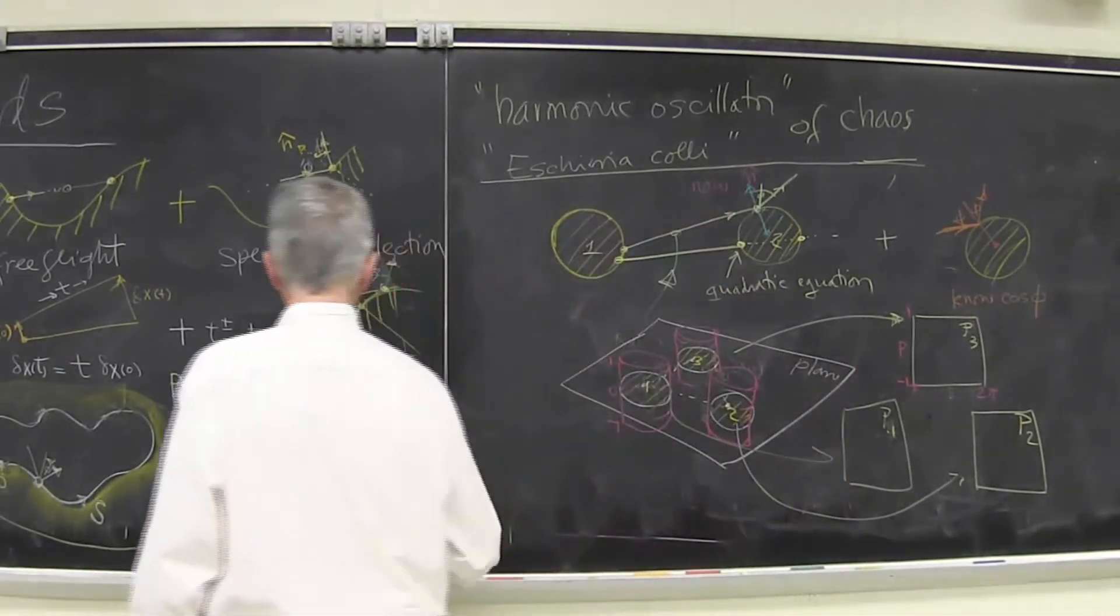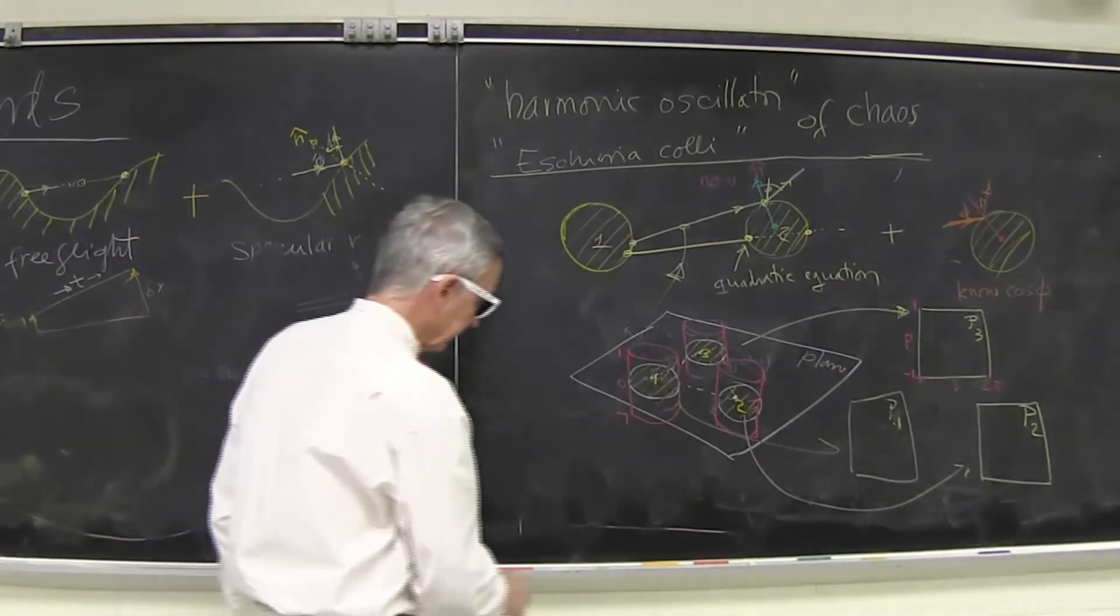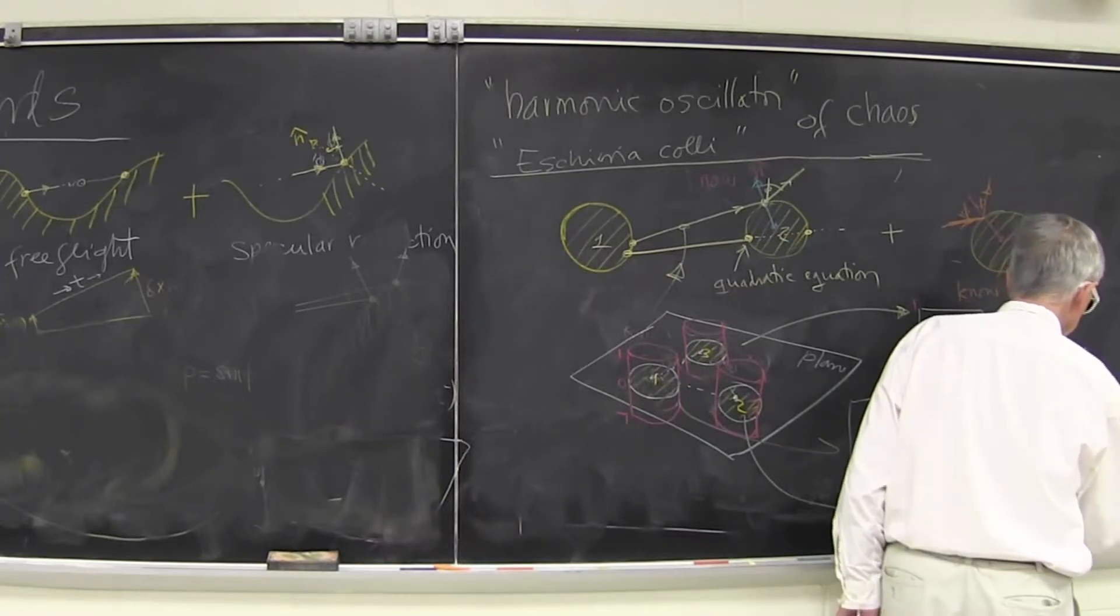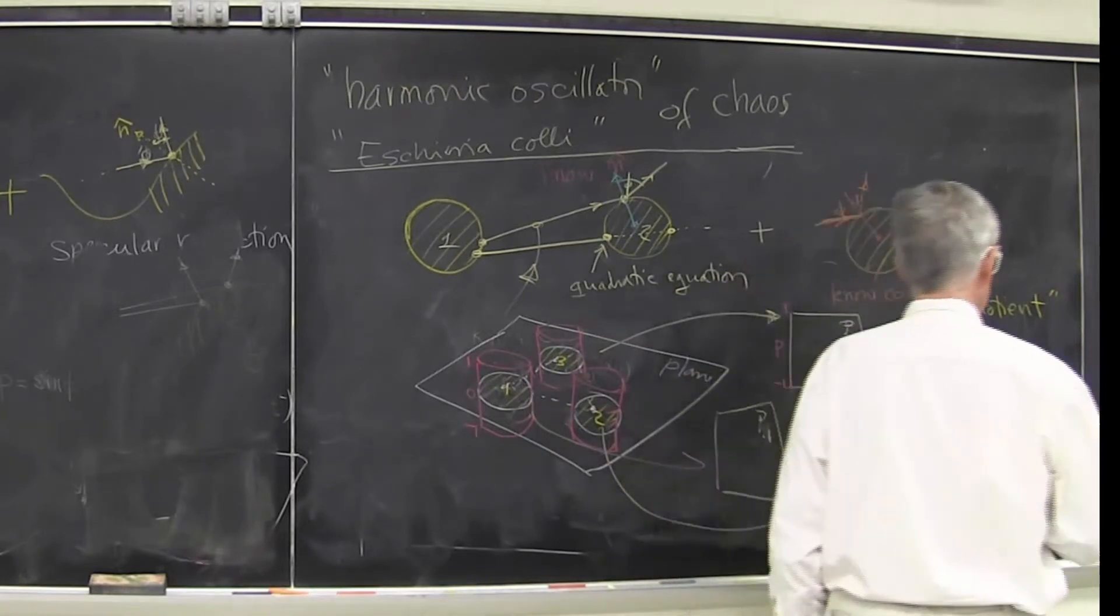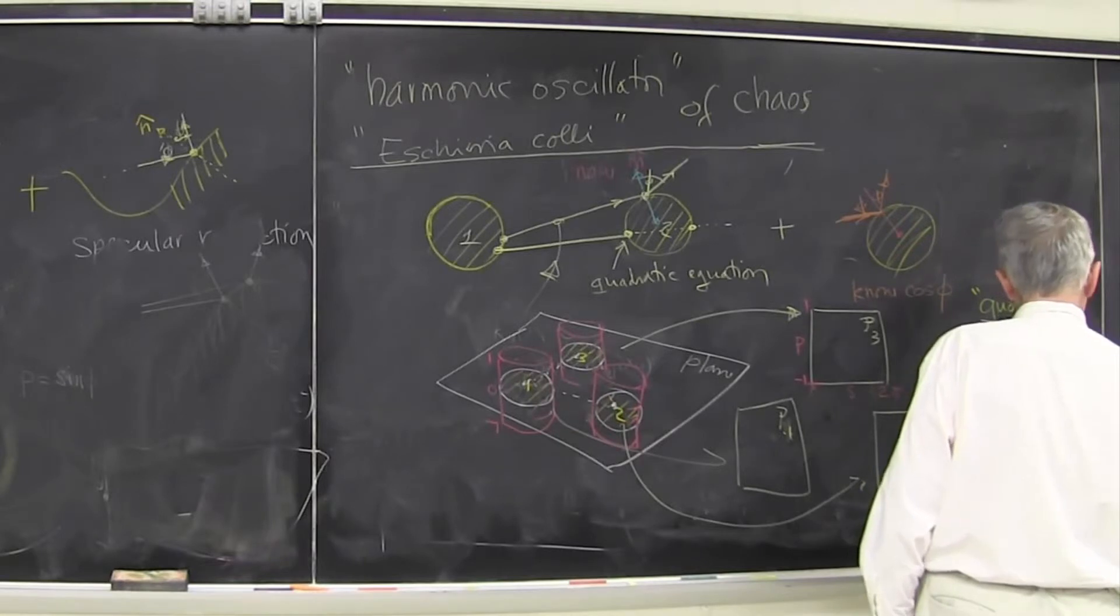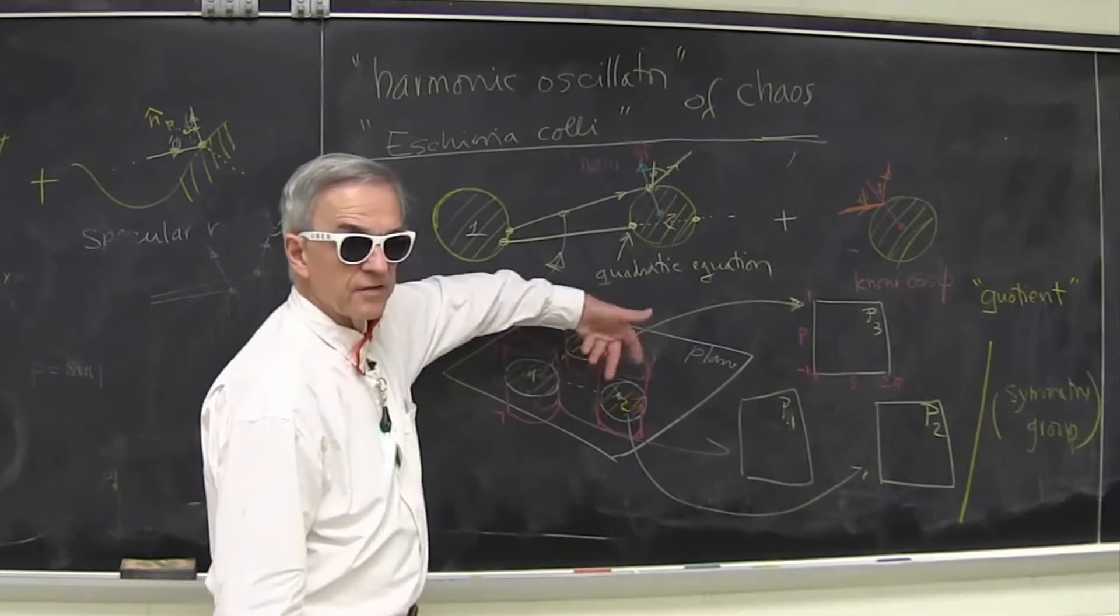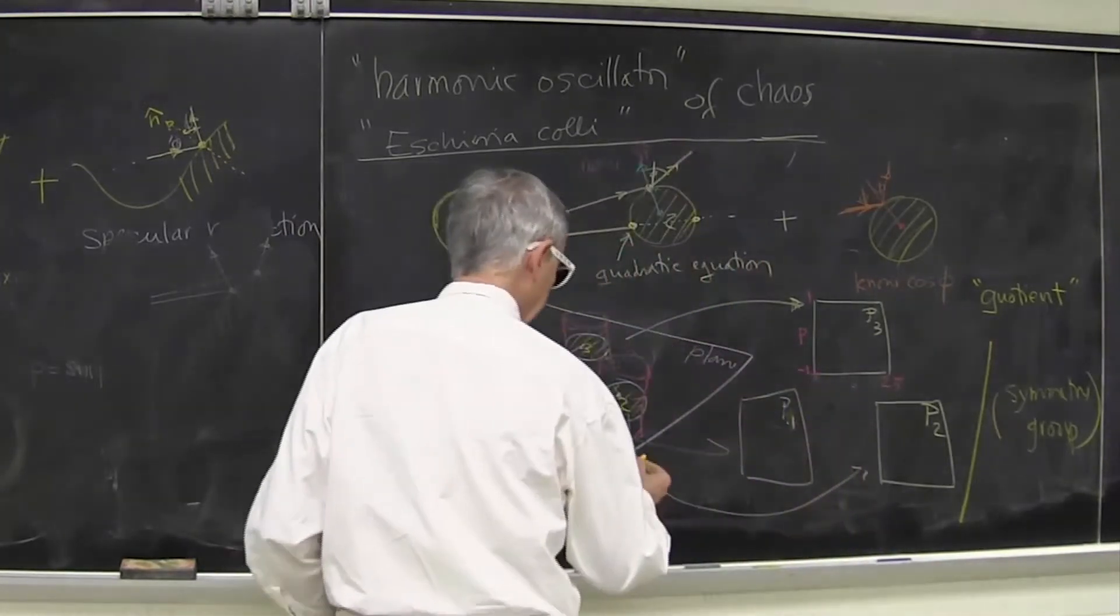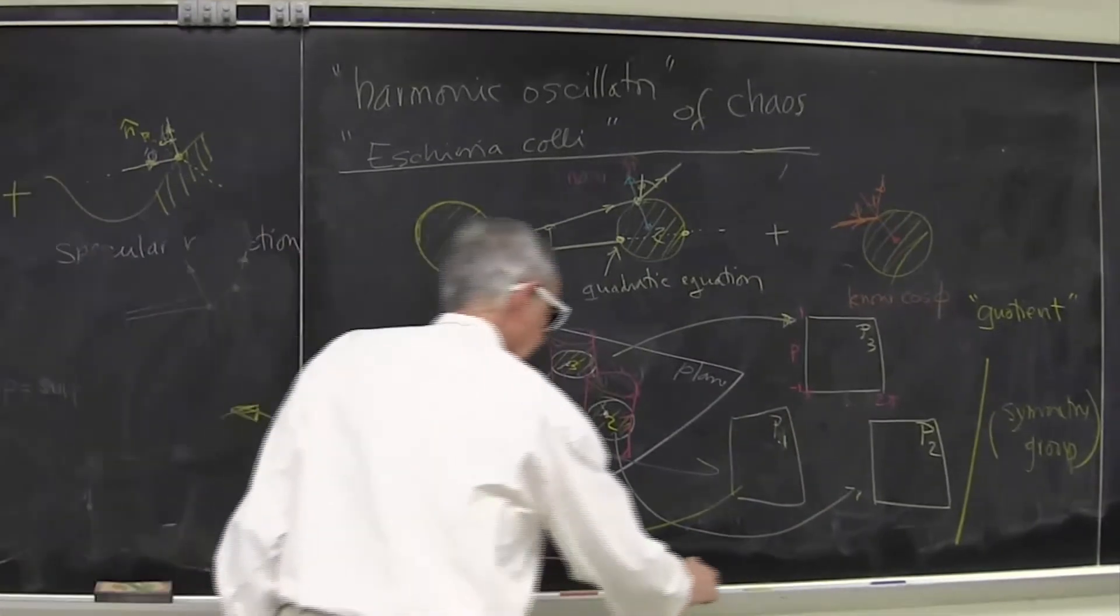And the idea of symmetry reduction will be, that will sound a little bit formal, but that's kind of general theory. What you will do is you will quotient this by the symmetry group. They'll turn out to be six different ways of labeling these discs. So very simple symmetry group. And what that will do is it will replace these three Poincaré sections by one.